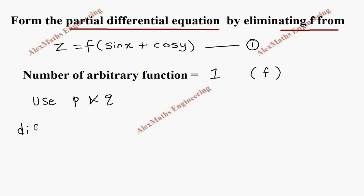We are going to find its derivative partially with respect to x. So this will be ∂z/∂x = f'(sin x + cos y) cos x, and all the terms inside f should be written as is.